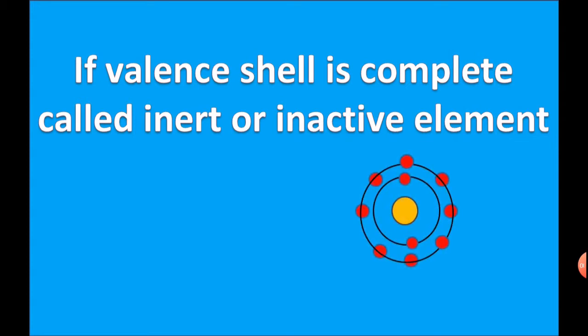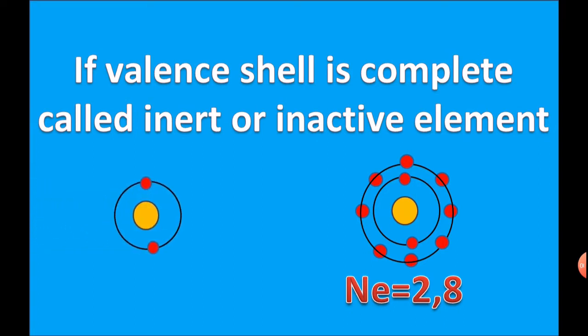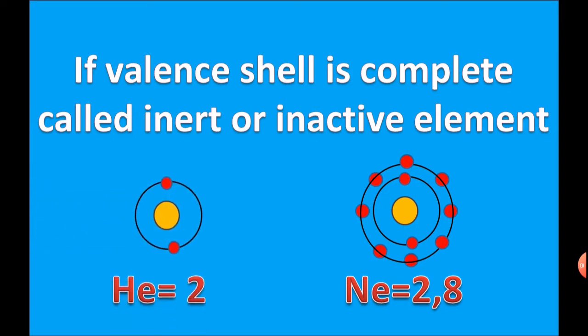If a valence shell is complete, the element is called an inert or inactive element. For example, Neon has electronic configuration 2,8 — its outermost shell is in the octet state, completely fulfilled. Helium has electronic configuration 2, which is in the duplet state, or complete state.